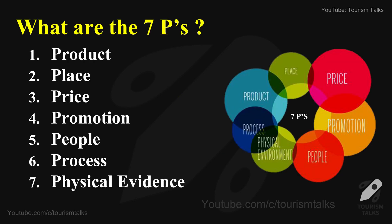The 7 P's of Tourism Marketing Mix are Product, Place, Price, Promotion, People, Process, and Physical Evidence. Some authors also define more than 7 P's, like an 8th P or more, but these 7 P's are commonly used.